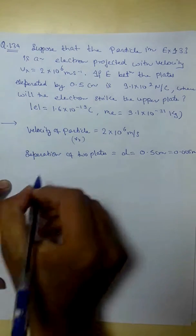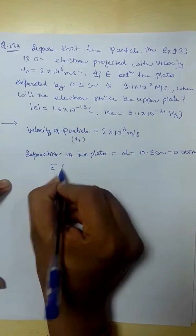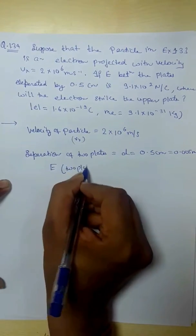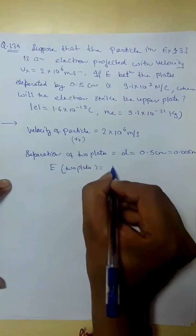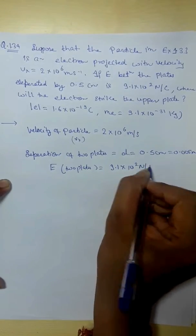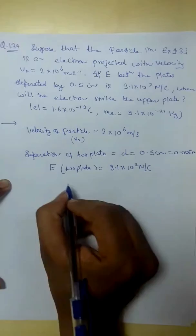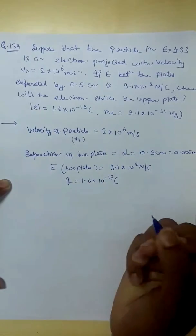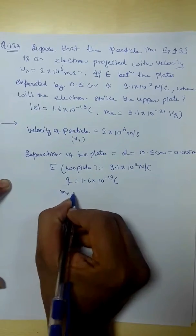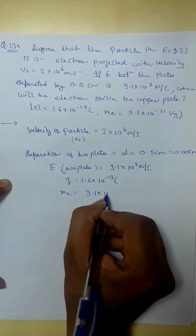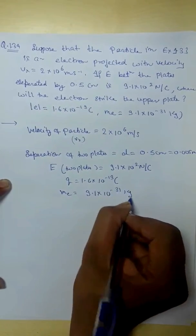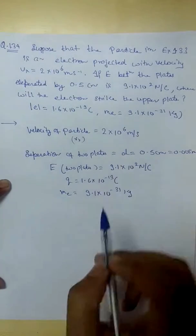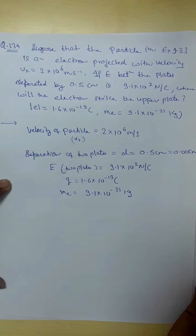Electric field between the two plates. Electric field between two plates is 9.1 into 10 to power 2 N per coulomb. Charge of electron you know 1.6 into 10 to power minus 19 and mass of electron you know 9.1 into 10 to power minus 31 kg. So, let's see. Even though it is given, it would be better if you remember these values.